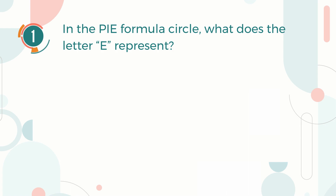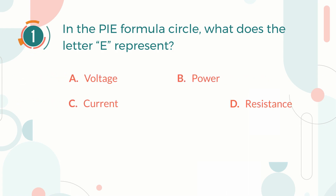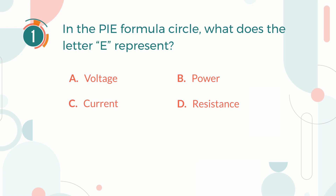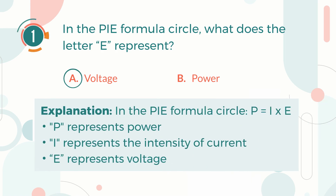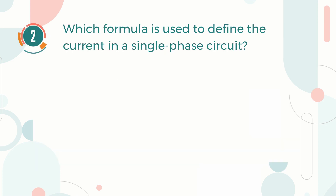Number one: In the PIE formula circle, what does the letter E represent? A) Voltage, B) Power, C) Current, D) Resistance. The correct answer is A, Voltage. In the PIE formula circle, P represents Power, I represents the intensity of current, and E represents Voltage.